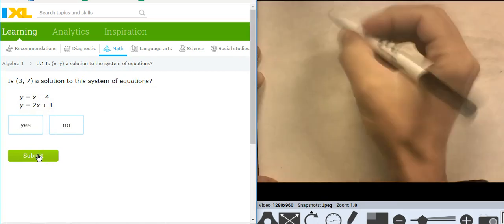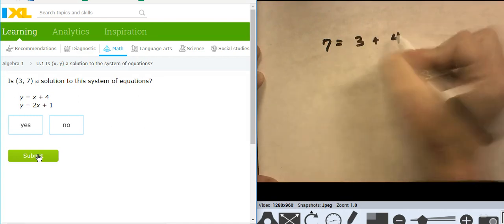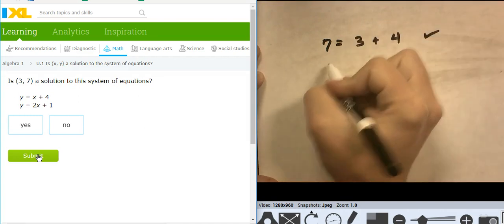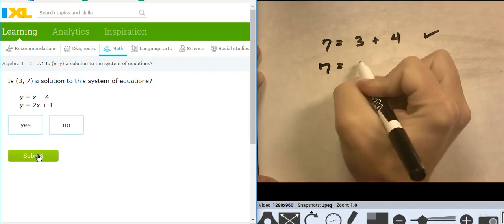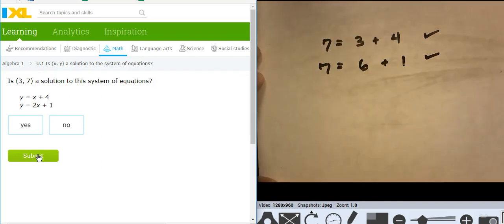So y, 7 equals 3 plus 4. That worked. Y, 7 equals 2 times 3, that's 6 plus 1. That worked. So yes.